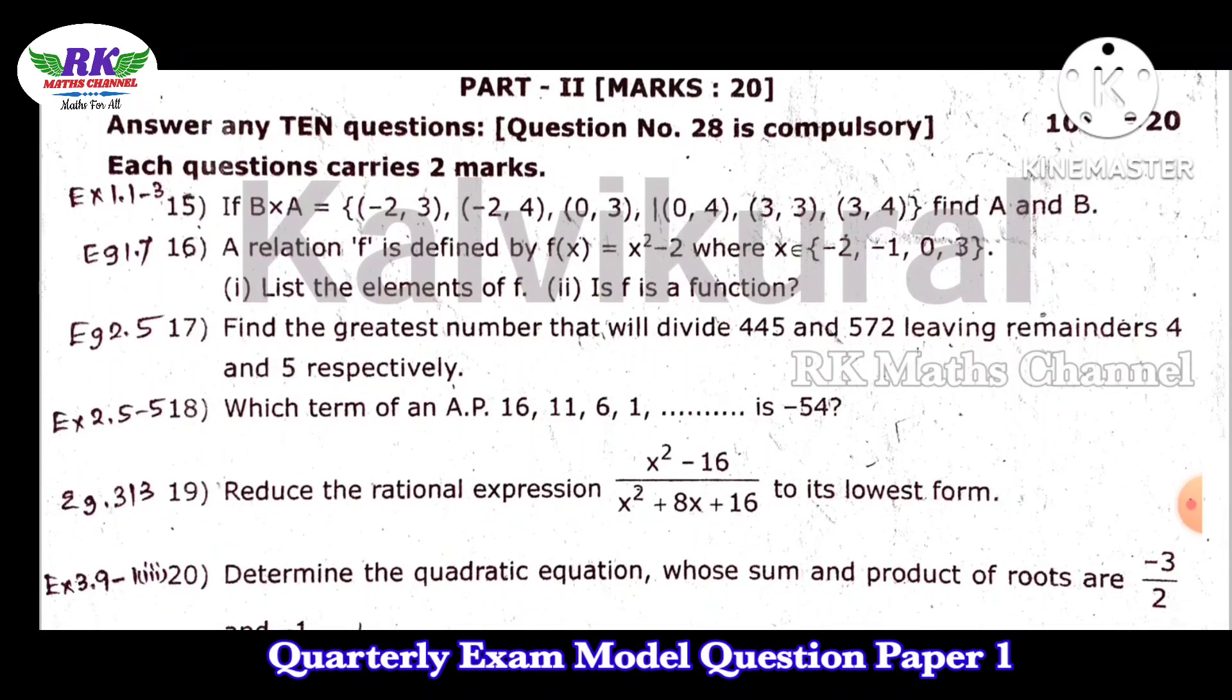First question number 15, so let's open B cross, then B cross what is the state A and B set. So that is in the first chapter. Next, A and f1 relation f equal to x square minus 2x values. Then the function list, what is f1 function, one to one, not onto one.